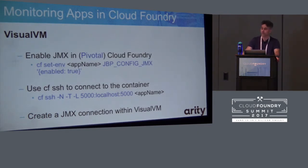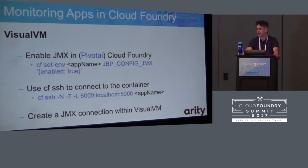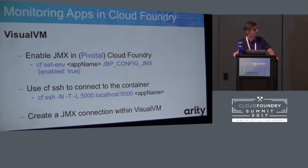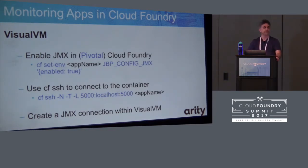These are the steps you would need to do if you wanted to monitor inside Cloud Foundry — it's actually quite easy. I've given the example using Pivotal's Cloud Foundry, but the instructions are universal to any Cloud Foundry application, so you should be able to do this if you're using Bluemix. There are really only three steps: first, enable JMX processes; second, create an SSH tunnel so that VisualVM, JProfiler, or YourKit can connect to the container; and third, establish that connection from VisualVM into the application.